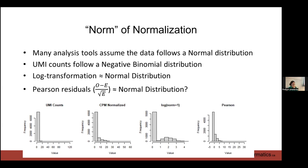Another option that's become popular is Pearson residuals. These are calculated where O is your observed count and E is your expected count given a model. Since we know our data follows a negative binomial distribution, we can model our data accordingly, figure out the expected counts, and divide the difference by the square root of that expectation. This gives you something that looks like a normal distribution - considered close enough to a normal distribution for tools like PCA.